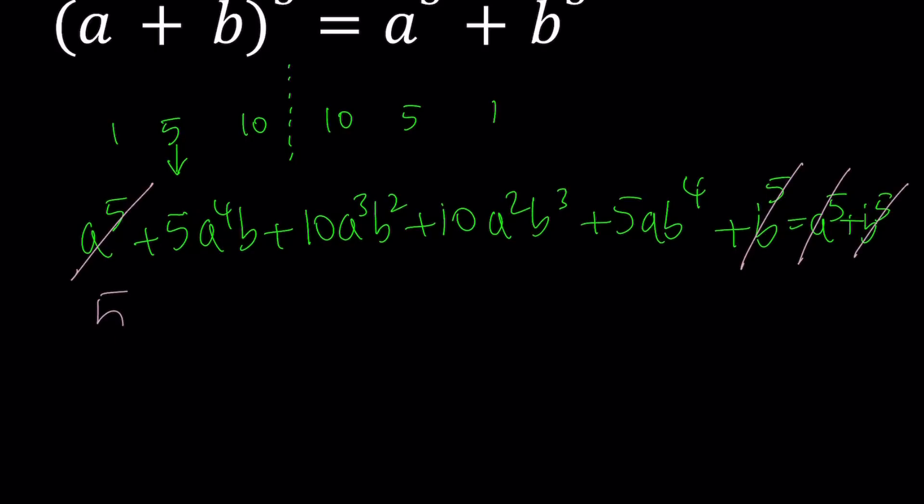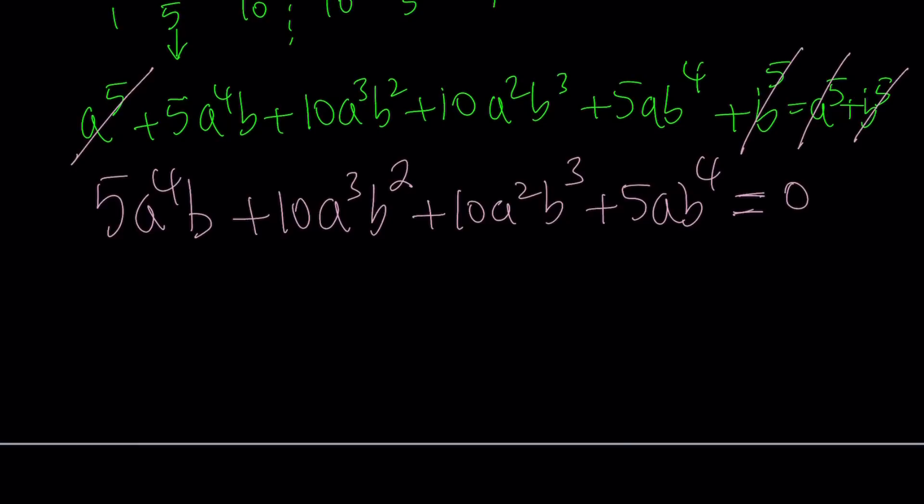Leaving us a zero on the right hand side. So let's rewrite this. 5a to the fourth b plus 10a cubed b squared plus 10a squared b cubed plus 5ab to the fourth equals zero. It's always good to get zero on one side if you're trying to solve an equation because you can hopefully factor it and then set the factors equal to zero and you'll get a bunch of solutions from there. Okay? So far so good.